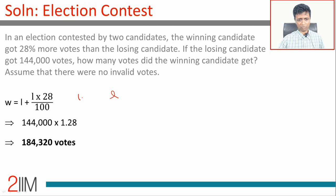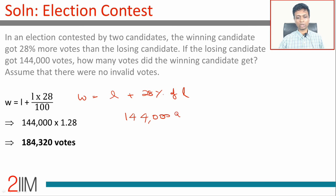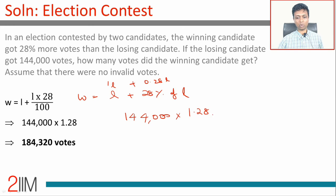I'm going to go one at a time. In the first part: the winning candidate gets 28% more votes than the losing candidate. So if the losing candidate gets L, the winning candidate would get L plus 28% of L. They get 28% more than what the losing candidate gets — 28% of whatever the losing candidate got. So the winning candidate gets 144,000 into 1.28.